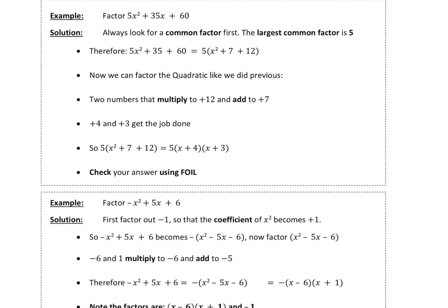Now, if you have a coefficient in front of the quadratic and you can factor it out of each term, do that first. You'll see 5 is a factor of each of those terms. So we factor the 5 out, and we're left with x squared plus 7x plus 12. We've already solved that — it's x plus 3, x plus 4. But you can't forget that the 5 is a factor as well. If you don't write the 5, you don't have the complete answer. You need the 5 as well.